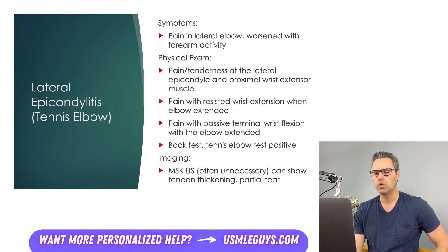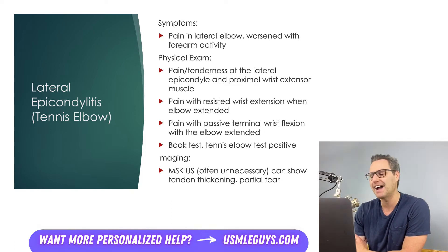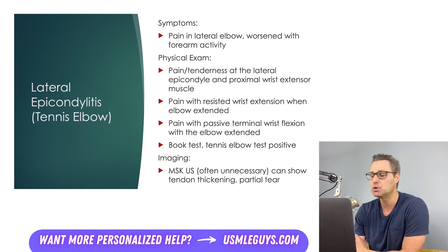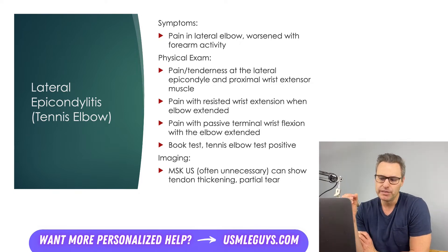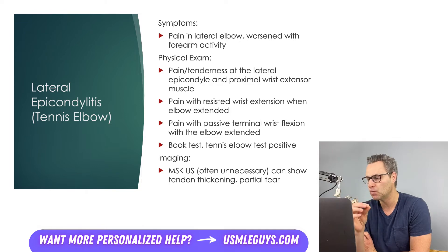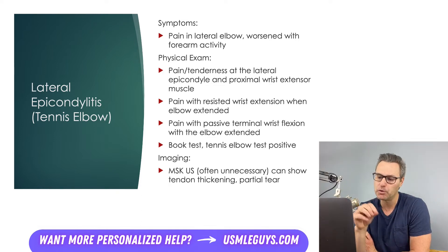Let's move on to the elbow, starting with lateral epicondylitis, also known as tennis elbow. This condition is brought on by repeated actions involving the forearm, and patients describe pain directed over the lateral aspect of the elbow. On exam, there will be tenderness to palpation over the lateral epicondyle and proximal wrist extensor muscles, as well as pain with resisted wrist extension when the elbow is fully flexed. The patient will also report pain with passive terminal wrist flexion with the elbow fully extended.